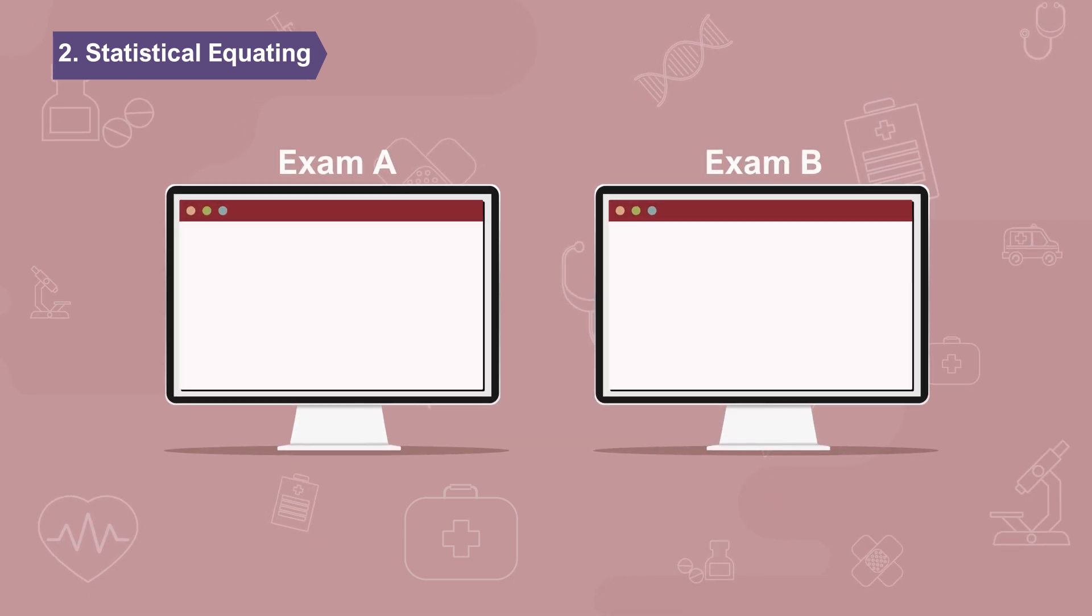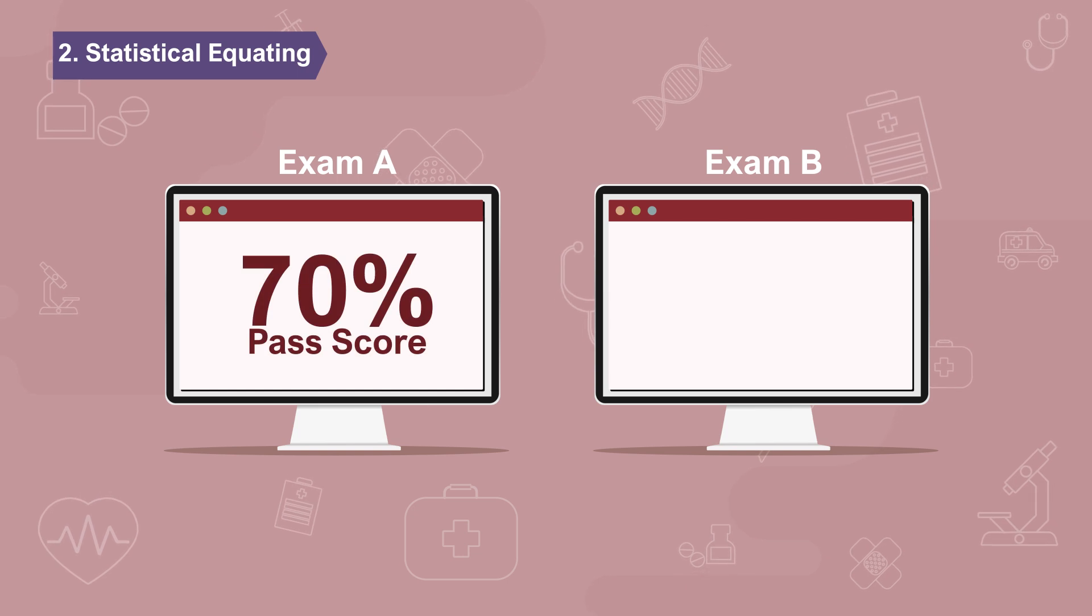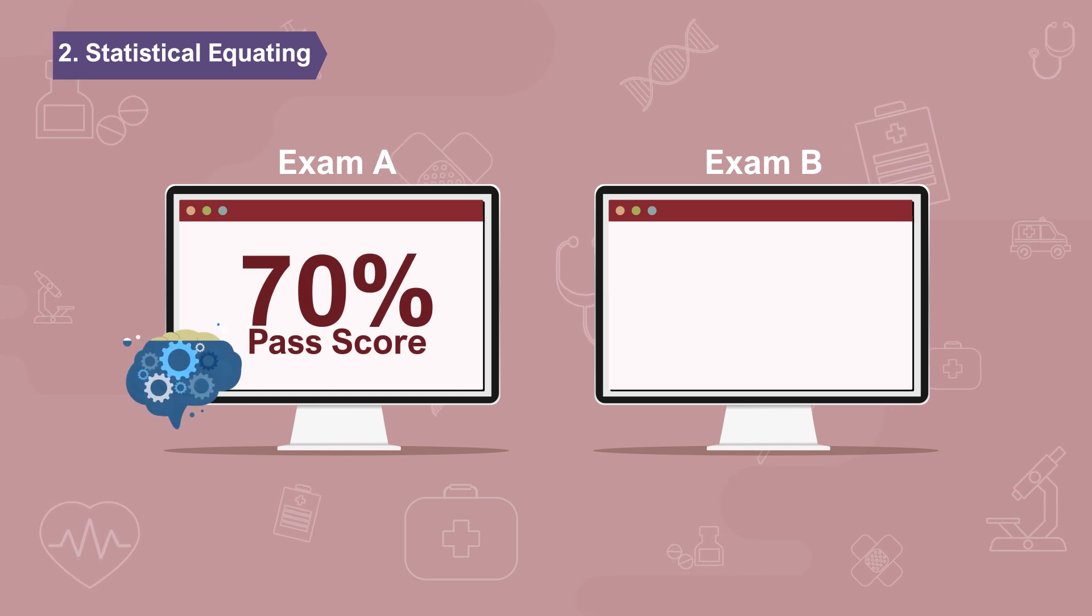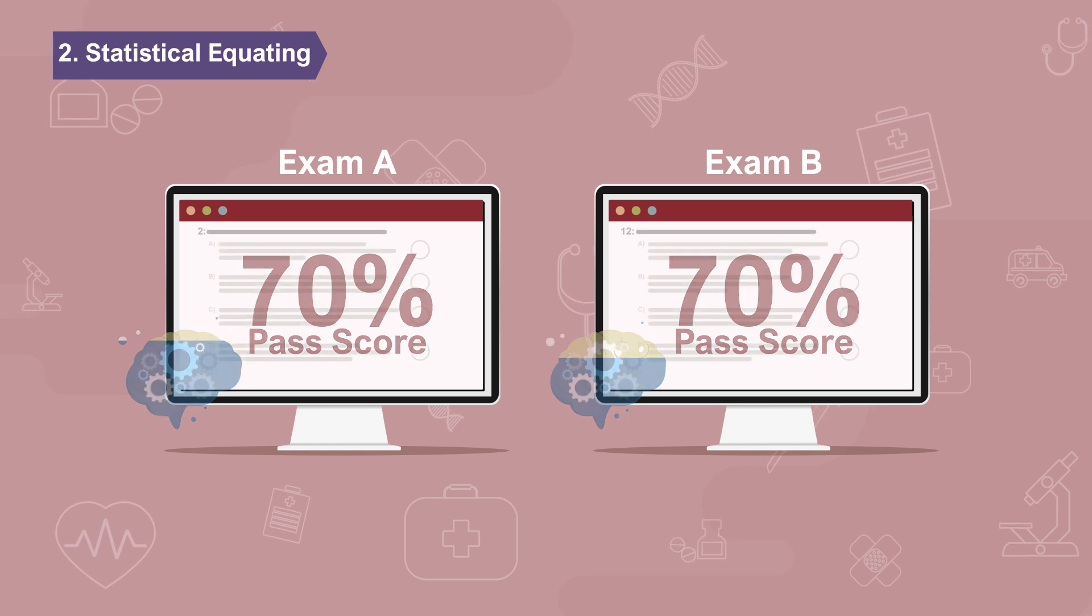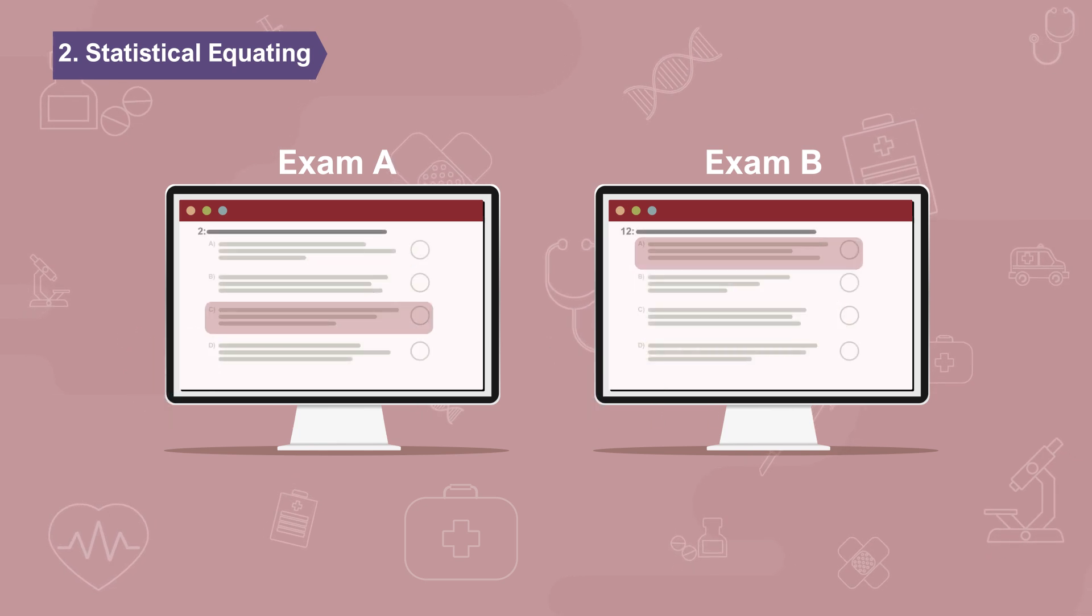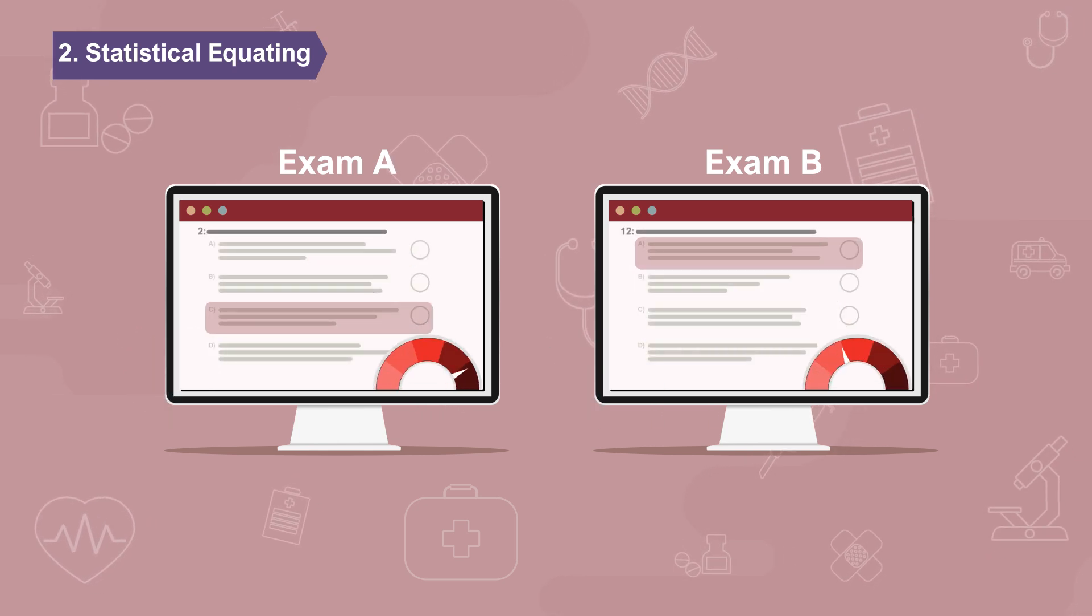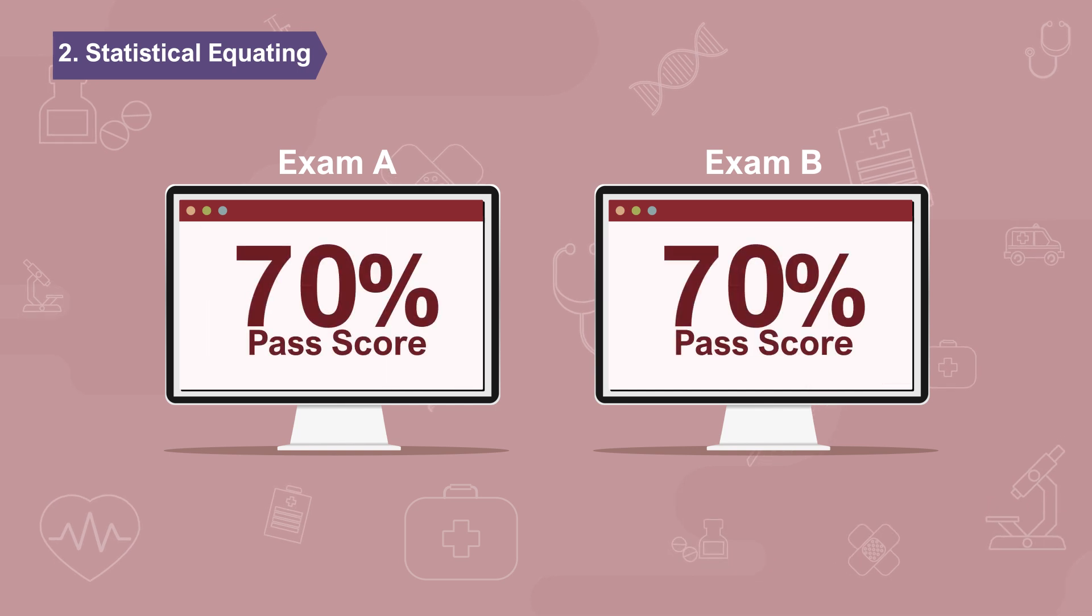For example, a 70% pass score on exam A does not indicate the same level of competence as a 70% pass score on exam B because the questions on the two exams are different with varying difficulty.